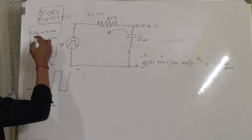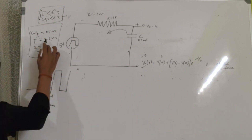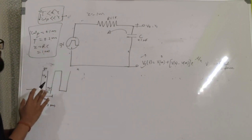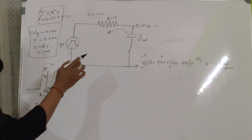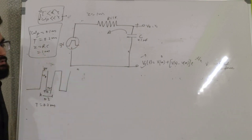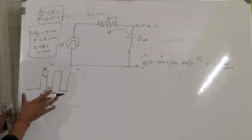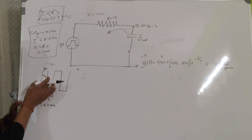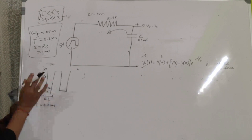For that we have considered pulse width equals 0.1 millisecond, time period equals 0.2 milliseconds, and tau equals R into C which is 1 millisecond. If you multiply 1kΩ with 1 microfarad it comes to 1 millisecond. So the input waveform has a pulse width of 0.1ms and a time period of 0.2ms.